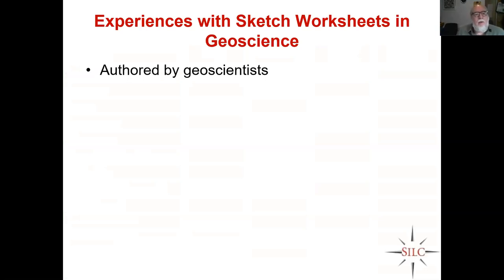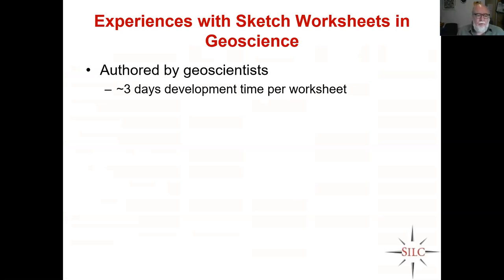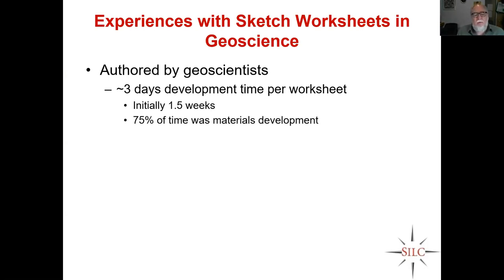Authoring takes about three days development time per worksheet in steady state. In the beginning it took longer, because they were figuring out what you can really do with the system. There's a little bit of consulting with one of my grad students, but Bridget did all the authoring — that's really important. 75% of the time was materials development — that's Bridget and Maisel's estimate. In other words, not having to do anything particular with the software, just figuring out: here's what I'm trying to do, here's my example. So software versus pencil and paper, 75% of the work is the same.